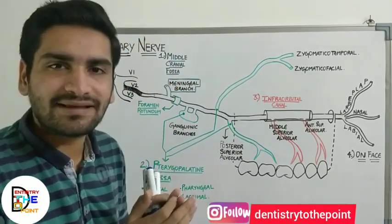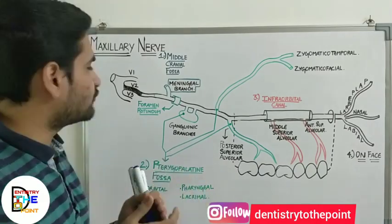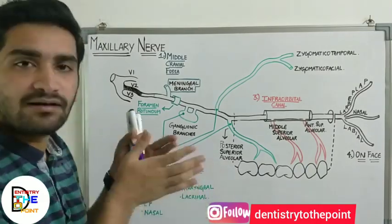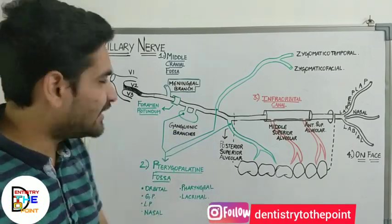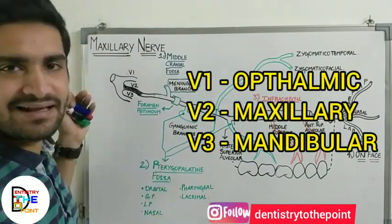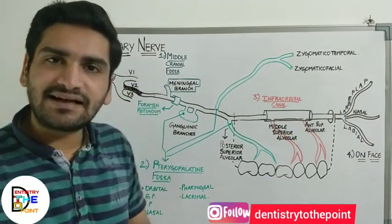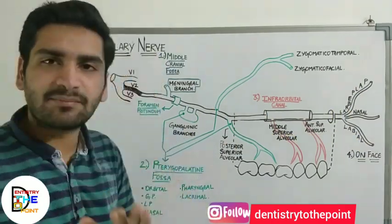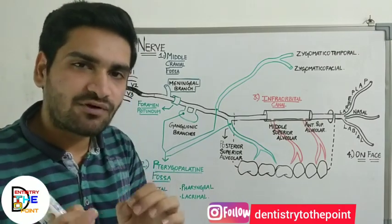Coming on to our today's topic, the maxillary nerve. After dividing from the trigeminal ganglion, the trigeminal nerve divides into three branches — ophthalmic, maxillary, and mandibular. The first and second divisions are purely sensory and the third division is a mixed nerve. This is important information to remember.